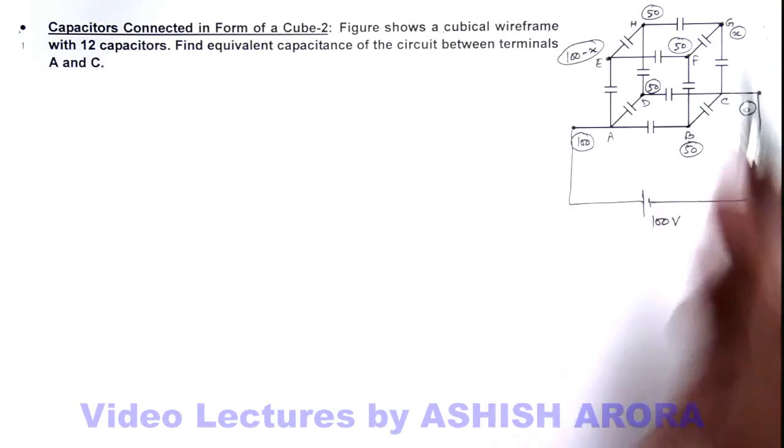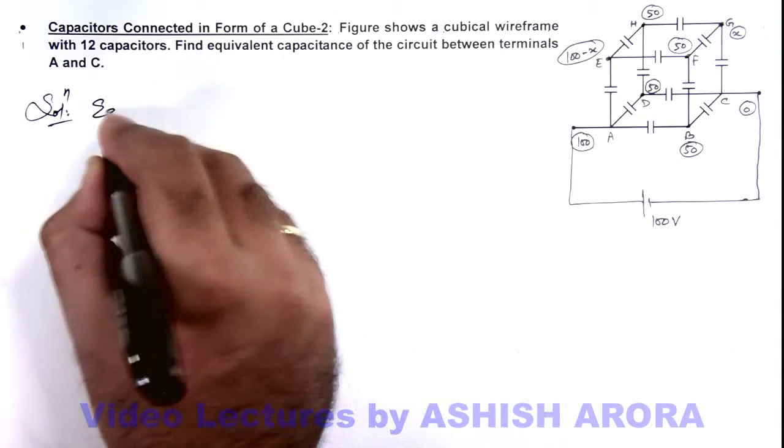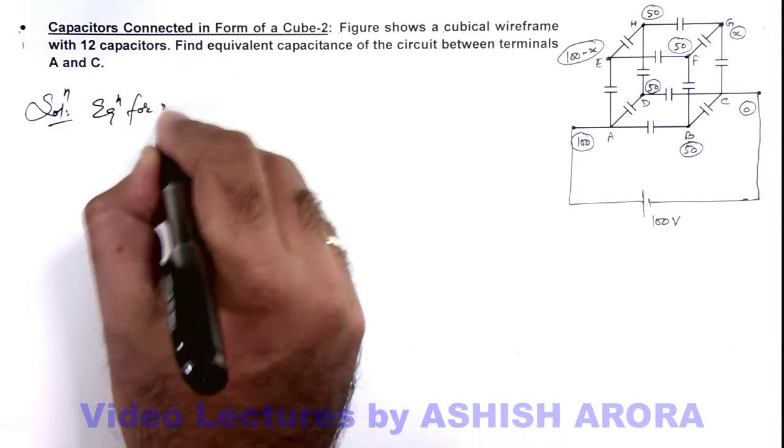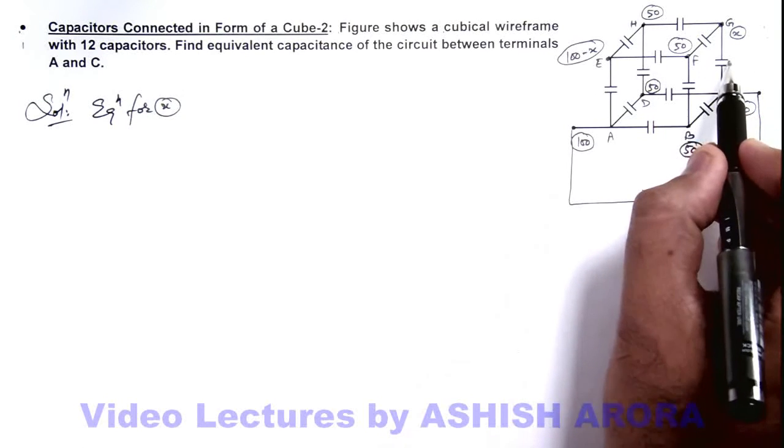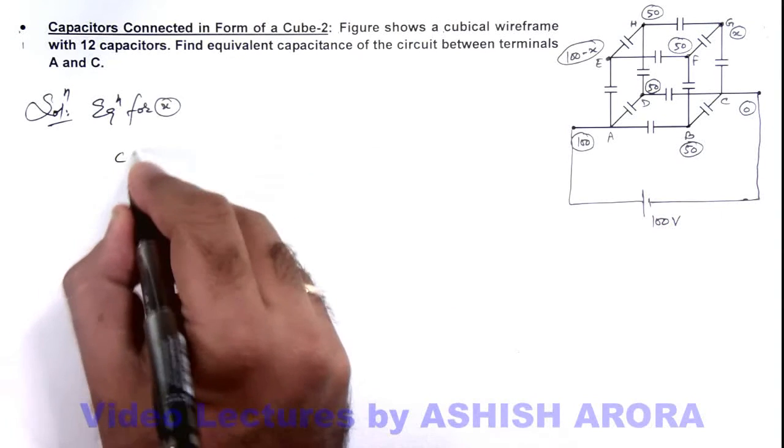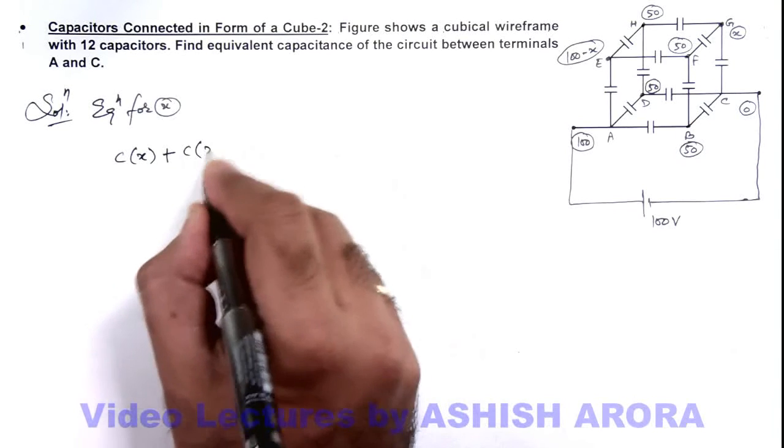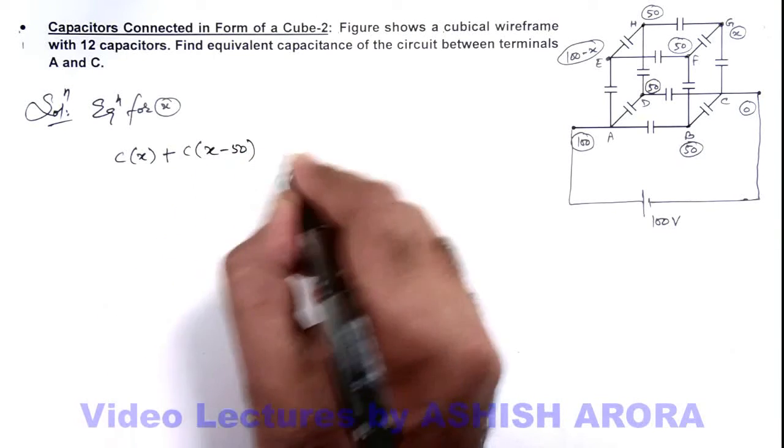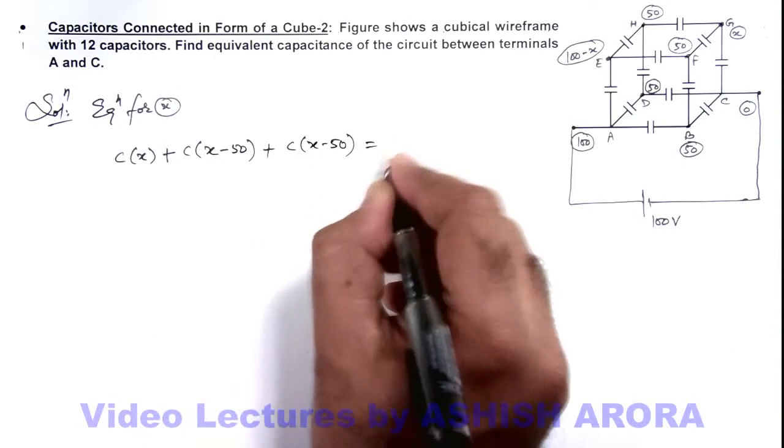We just need to calculate one variable for which we can write the equation. The equation for x can be given as the sum of these three plate charges is equal to zero. So charge on this capacitor will be C multiplied by x, plus charge on this will be C multiplied by x minus 50, plus charge on this is C multiplied by x minus 50, which should be zero.